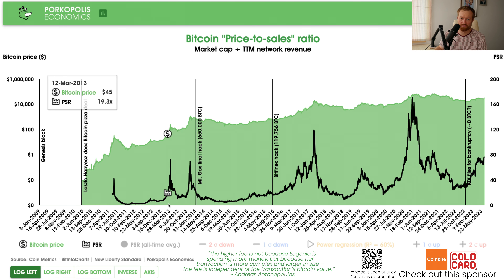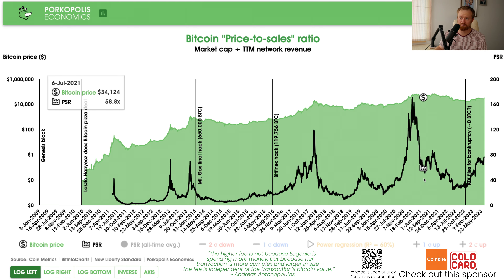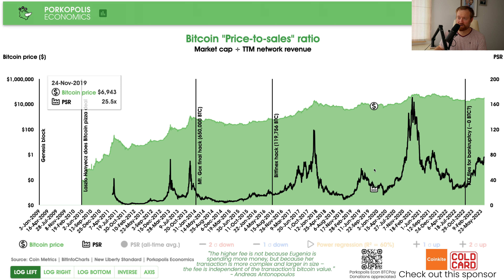Multiples can help you a lot. When you take the market cap and divide it by the revenue you get a multiple. When they go crazy — which they did in 2013, twice in 2017, and in March 2021 — you can see that this really helps you identify if a price boom is an anomaly. So the PSR is 75X right now, meaning the market cap of Bitcoin is 75 times higher than Bitcoin network revenue on a trailing 12-month basis.